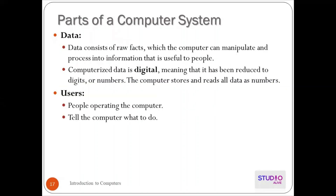Data consists of raw facts which the computer can manipulate and process into information that is useful to people. The user gives data as input and the system processes it into output and stores it. Computerized data is digital, meaning it has been reduced to digits and numbers. The computer stores and reads all data as numbers — digital numbers means zeros and ones. The computer only reads, writes, understands, and manipulates in zeros and ones.